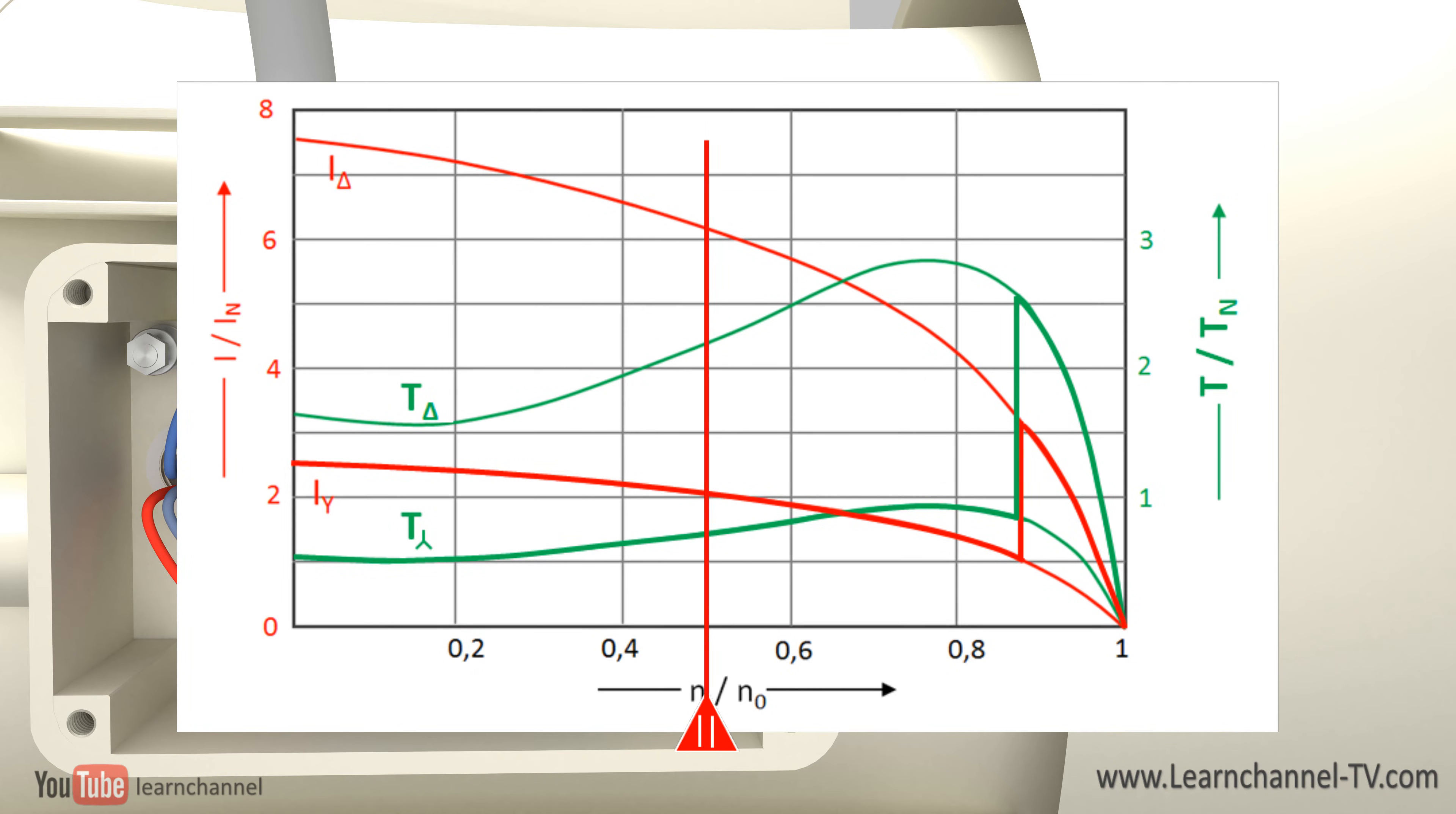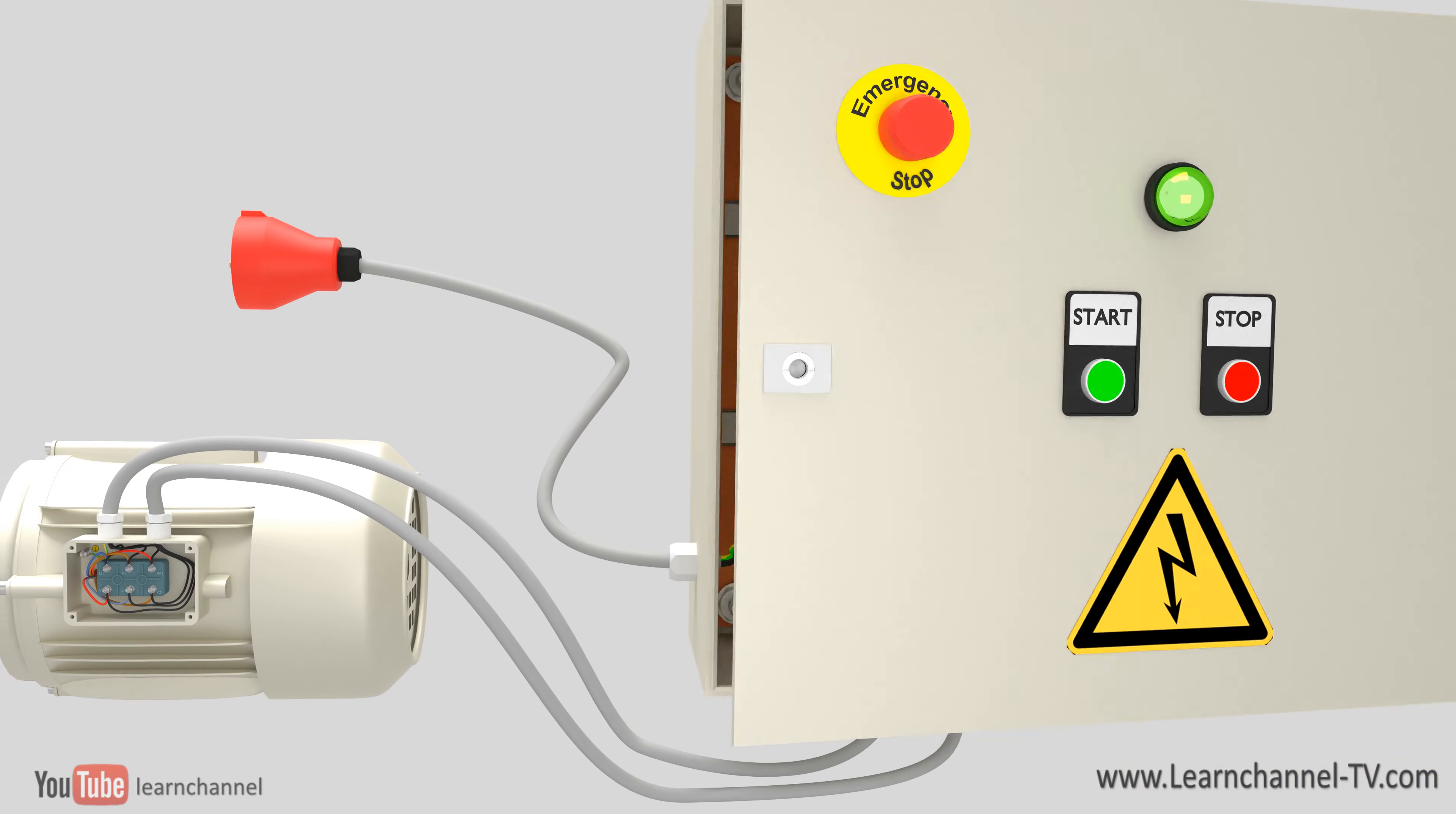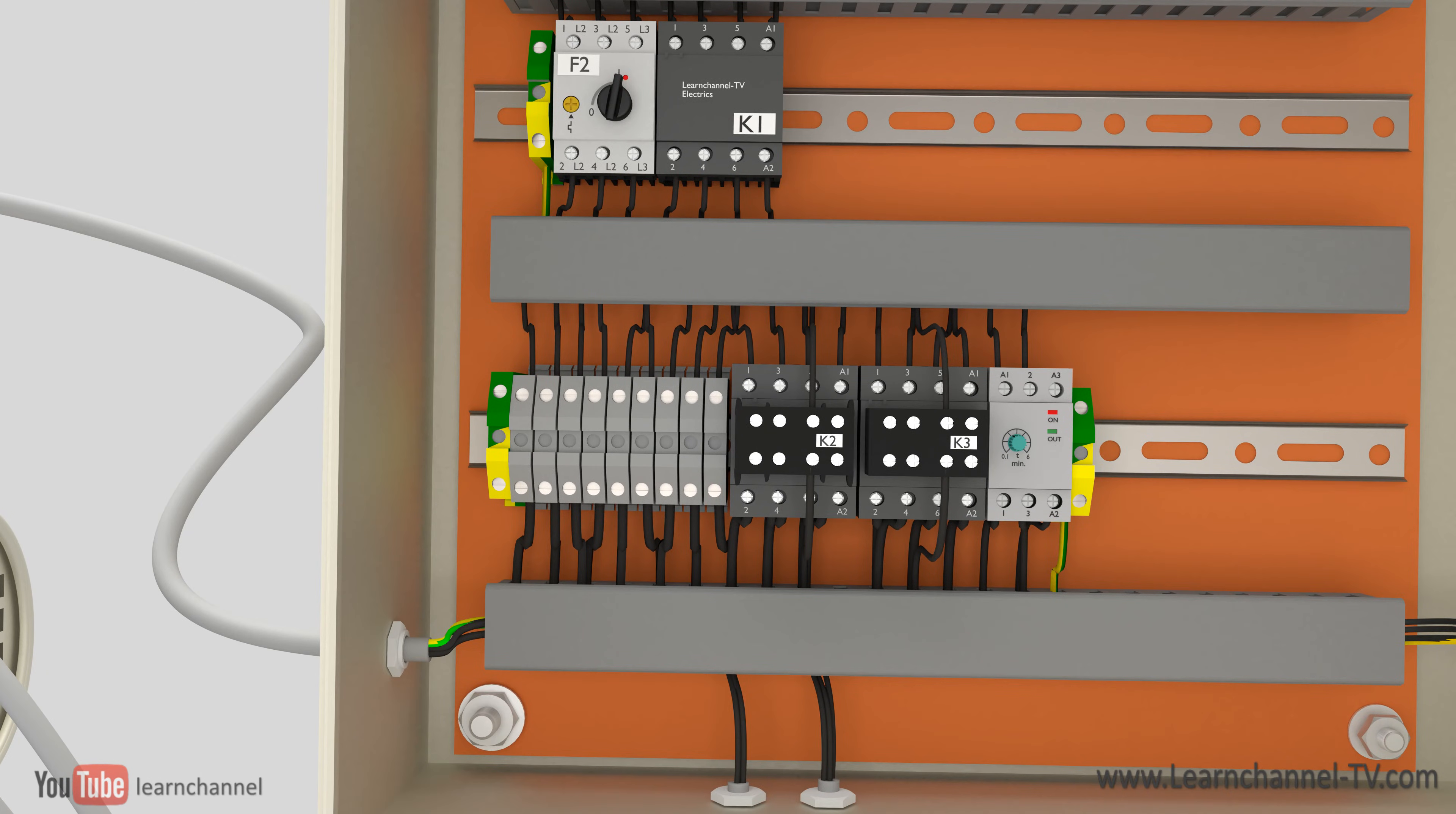and automatically switching to delta after a given time when the engine has already reached a certain speed. For this purpose, the outputs of the coils are led out at the motor terminal board to a relay control.